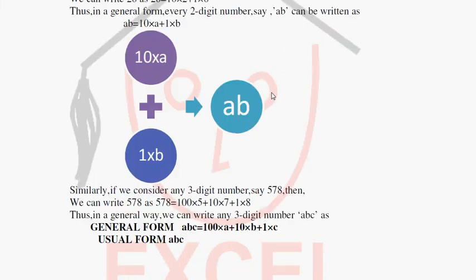For example, we want to know about the two-digit number AB and how it is formed. For forming AB we have 10 into A plus 1 into B. It is graphically shown here with the help of smart arts, which makes it easier and faster for a child to learn.